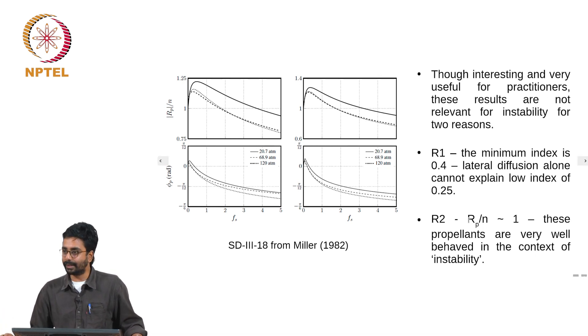Reason two, and it is the most important: the response function divided by the index, or the response function scaled by the index, is of the order of 1. Remember that the response function becomes equal to the index at 0 frequency. So R_p by n will be 1 at 0 frequency. But more importantly, the maximum value of the response function is only about 1.25 times the n. n is about 0.4. Therefore, the response function is 0.4 times 1.25, which is nowhere close to what is required to trigger linear growth of oscillations which eventually leads to DC shift.